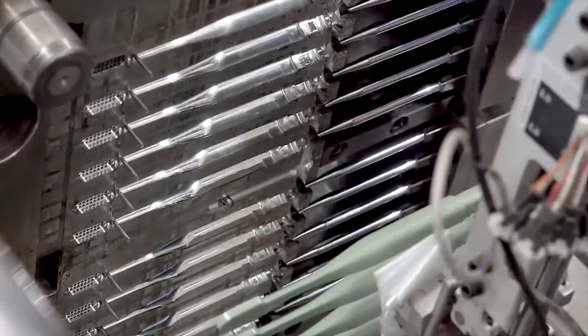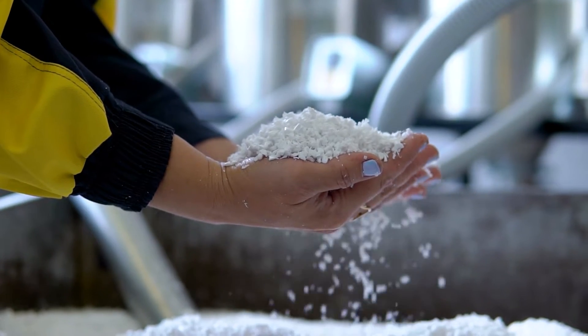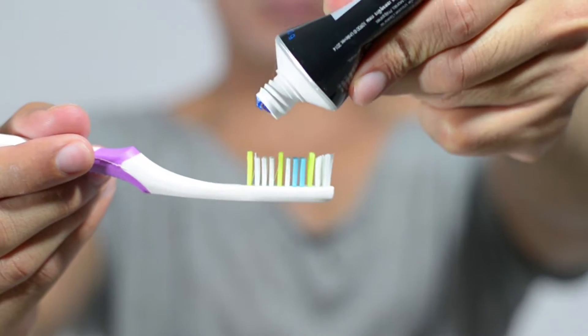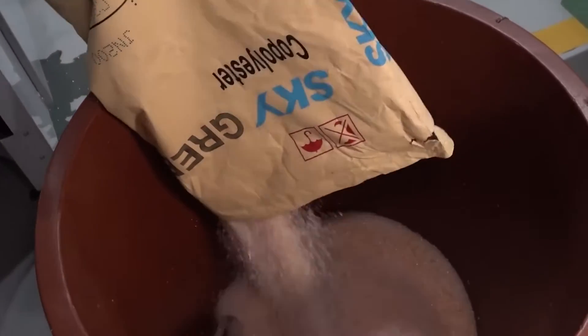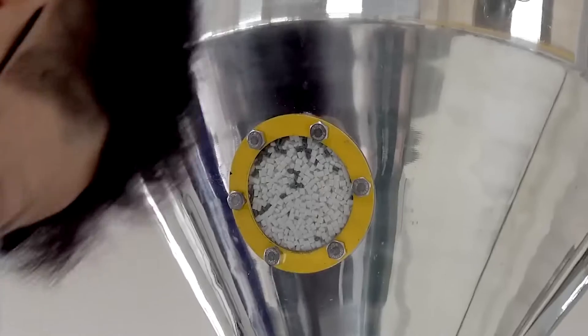The first step in toothbrush production is the careful sourcing of raw materials. The primary components of a toothbrush include the handle, bristles, and sometimes additional features like rubber grips or tongue cleaners. The handles are typically made from plastic, which can be sourced from various polymers such as polyethylene or polypropylene. The handles are often produced using a process called injection molding.